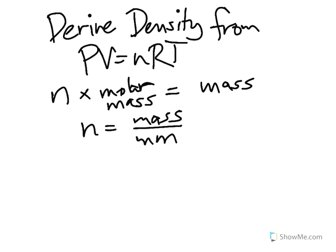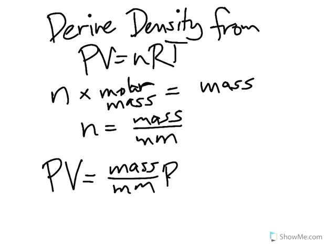If that's the case, we can substitute that into the equation for n. So that gives you PV is equal to mass divided by molar mass times RT.